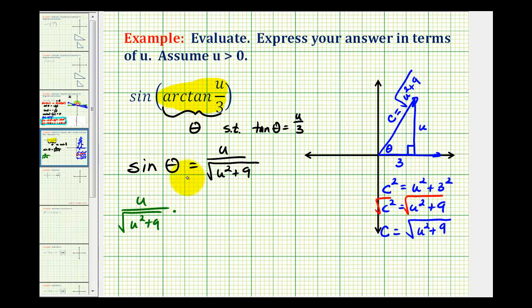we would multiply both the numerator and denominator by the square root of u squared plus nine, so our numerator would be u times the square root of u squared plus nine all over u squared plus nine.